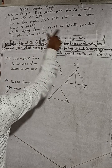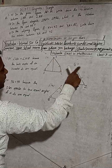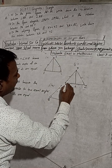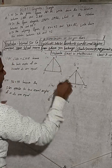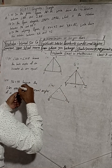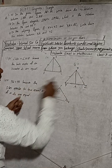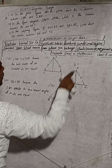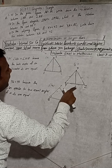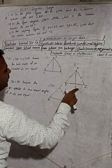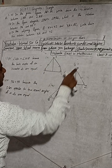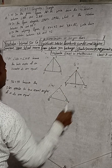In the adjoining figure, if XY is equal to XZ, and YA is equal to AZ, write the relation between XA and YZ.